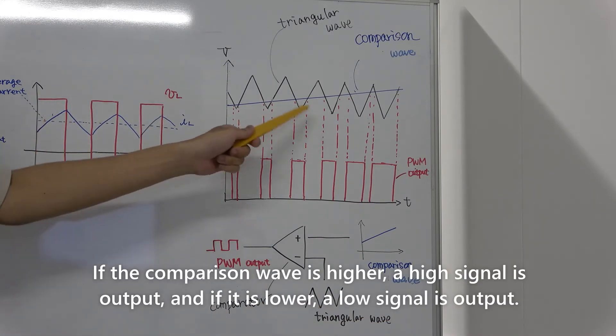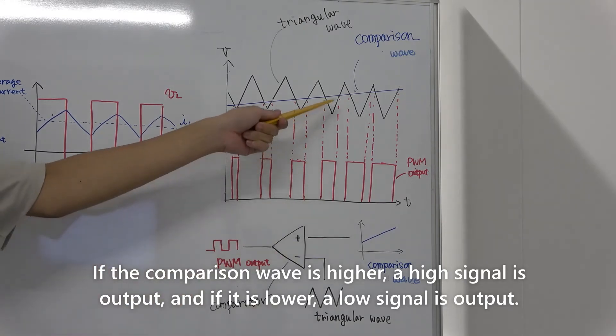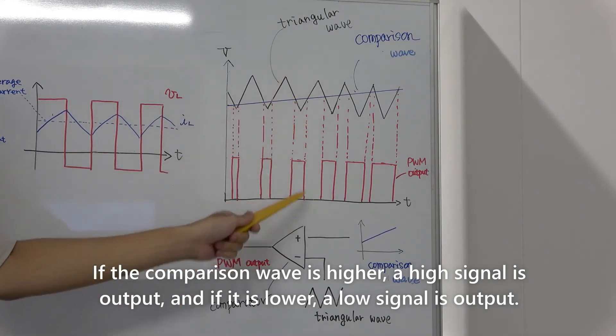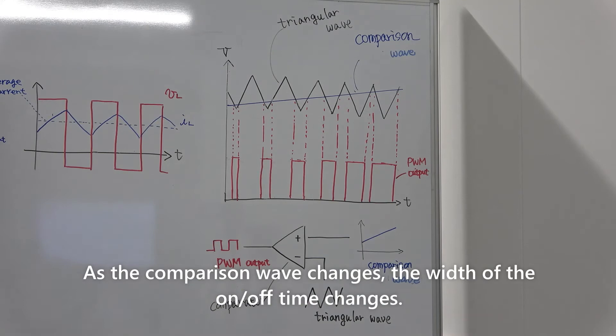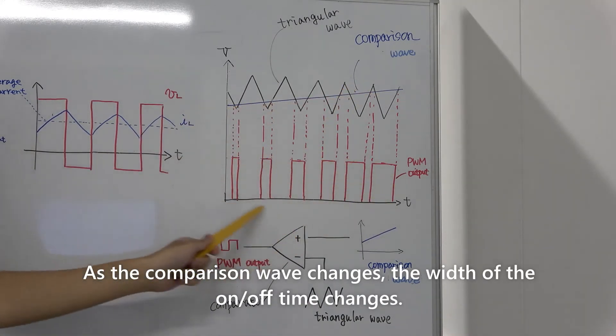If the comparison wave is higher, a high signal is output, and if it is lower, a low signal is output. As the comparison wave changes, the width of the on-off time changes.